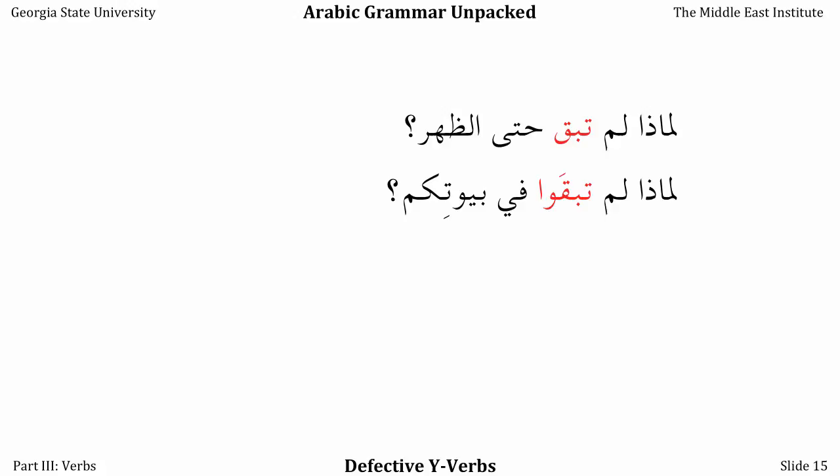Lam ansa al-tadhkira — I did not forget the ticket. Here again the alif maqsura has transformed into fatha, so it's unclear where the missing letter would be. Vocabulary will be your friend here. But if we say lam yansau al-tadhakir — they did not forget the tickets — here it's not quite so unclear which letter is missing, though it still appears that there's a missing letter. So watch out for these.